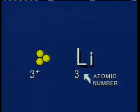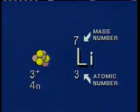The element lithium has three protons in its nucleus, and so is assigned an atomic number of three. The most common isotope of lithium has four neutrons making a total of seven particles in its nucleus. Consequently, it has a mass number of seven.